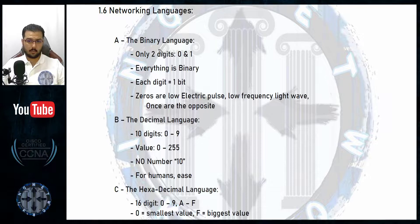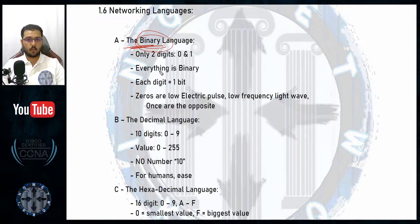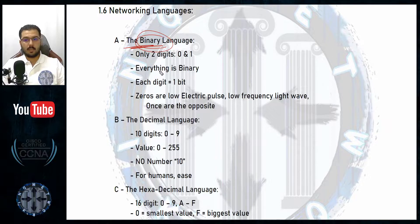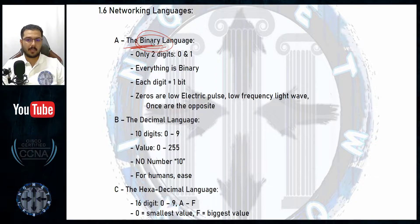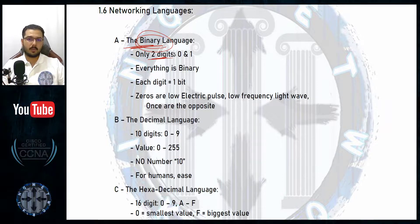The most common language used between devices will be the binary language — you will not use this one, it will be between the devices. The word 'binary' refers to something made of only two elements. The binary language is a language that has only two digits: it was entirely built based on zero and one, and that's it.